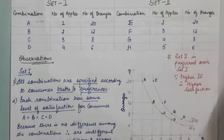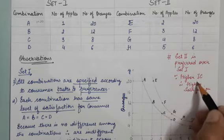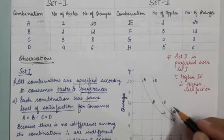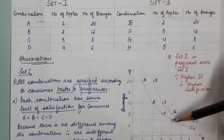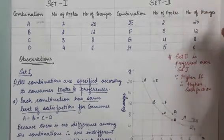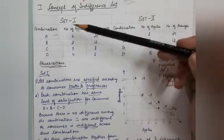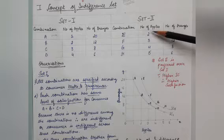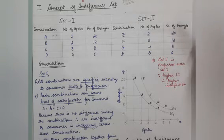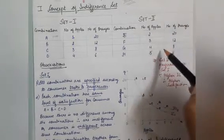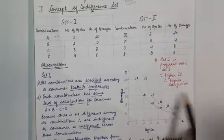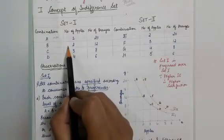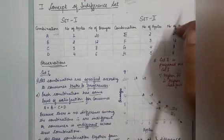Set 2 is preferred over Set 1 because a higher indifference curve gives more satisfaction. As the indifference curve moves upward, the combinations of goods represent more items, giving higher satisfaction. We are comparing relative satisfaction — not measuring exactly how much satisfaction each set gives.